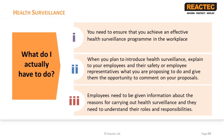To carry out health surveillance, you need to ensure an effective health surveillance program in the workplace, including cooperation from employees. When you plan to introduce health surveillance, explain to your employees, union representatives, and safety representatives what you're proposing to do, and give them the opportunity to comment on your proposals. Employees need to be given information about the reasons for carrying out health surveillance and must understand their roles and responsibilities.